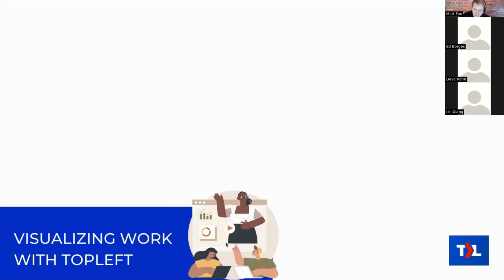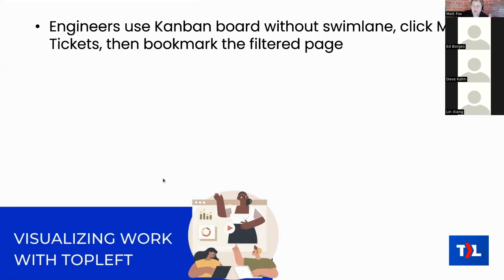Some tools that help engineers visualize their work in top left: engineers should use a Kanban board without a swim lane, filtered to show only their own work. Click 'my tickets' at the top of the board — that filters to just their work. You can then bookmark the resulting URL with the filter applied, or set it as a pinned tab in your browser, so you can get to your personal board in one click.